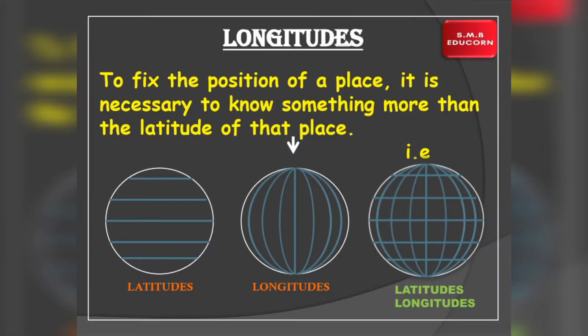Ham ne is chapter ke previous video me latitudes aur usse related chizo ke baare me jaan liya hai. Lekin ham kisi bhi ek reference point se earth par maujud location ka exact pata nahi laga sakti hai. Exact location ya phir position ko identify karne ke liye, hamare paas latitudes ke saath saath longitude ka bhi knowledge hona zaruri hai. Tabhi aap easily earth par kisi bhi place ko exact locate kar sakti ho. Now the question is why? Kya problem aati hai? To chalo ab isi ko hum ek example se samajhte hai.